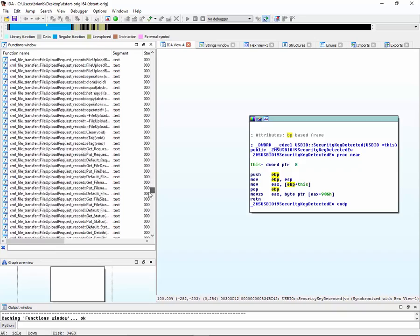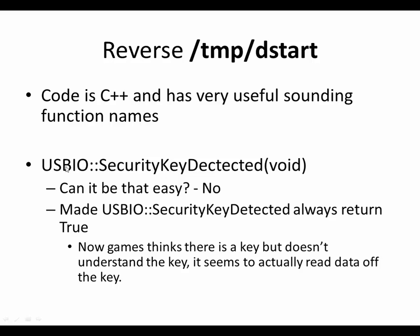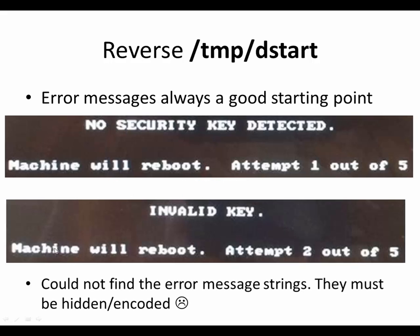There are tons of functions. The first one that jumped out at me is 'USB IO security key detected.' I thought, oh, can it be that easy? Maybe I just make this function always say yes, security key is detected. But it wasn't that easy. I did make USB IO security key detected always return true, and what happened is the game thinks there's a key in there but doesn't understand the key. It can't actually read the data off the key. The message I got was 'invalid key, machine will reboot.'